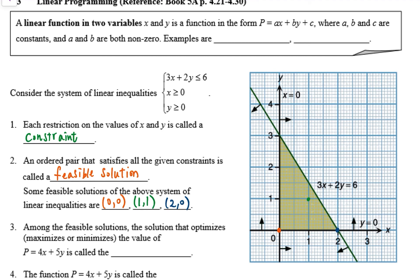Among the feasible solutions, the solution that optimizes, either maximizes or minimizes, the value of the linear function P = 4x + 5y is called the optimal solution.